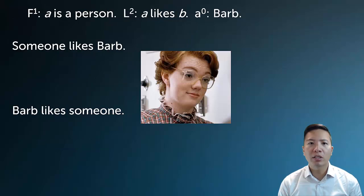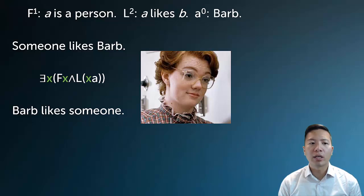So here's a very basic example of what a multi-place predicate looks like. Someone likes Barb, Barb likes someone, how do I symbolize these? Well, let's look at the first one for someone likes Barb. The first thing I have to say is that there is someone, and that person likes Barb. Well, since Barb is just the name letter A, the symbolization of this is pretty straightforward. We say there exists X, FX, and LXA.